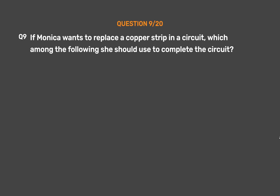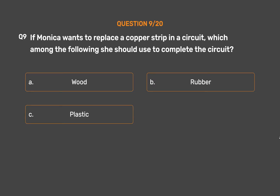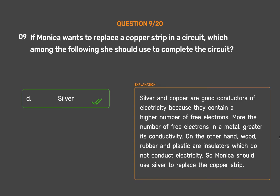Question number 9. If Monica wants to replace a copper strip in a circuit, which among the following should she use to complete the circuit? Option A: Wood. Option B: Rubber. Option C: Plastic. Option D: Silver. The correct answer is Option D, Silver. Silver and copper are good conductors of electricity because they contain a higher number of free electrons. More the number of free electrons in a metal, greater its conductivity. On the other hand, wood, rubber, and plastic are insulators which do not conduct electricity. So Monica should use silver to replace the copper strip.